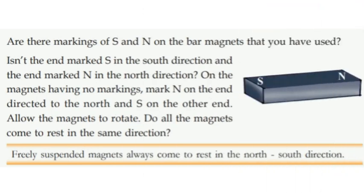Are there markings of S and N on the bar magnets that you have used? You have 4 pole magnets — look at S and N on them. You will see that the end marked S points in the south direction and the end marked N points in the north direction. On the magnet having no marking, mark N on the end pointing to north and S on the other end.